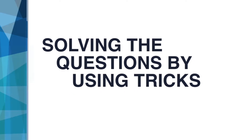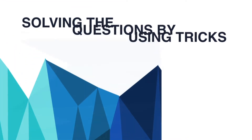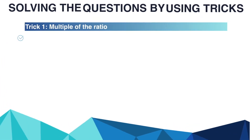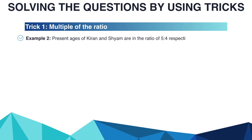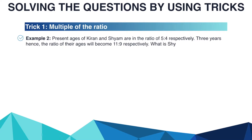So the first trick is 'multiple of the ratio.' If the question gives ratios of ages, we can use this. For example: present ages of Kiran and Sham are in the ratio 5 to 4 respectively. Three years hence, the ratio of their ages will become 11 to 9 respectively. What is Sham's present age? Options are A: 24, B: 22, C: 26, D: 28.